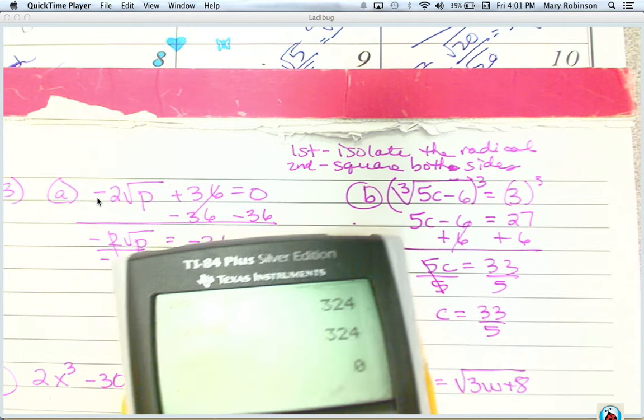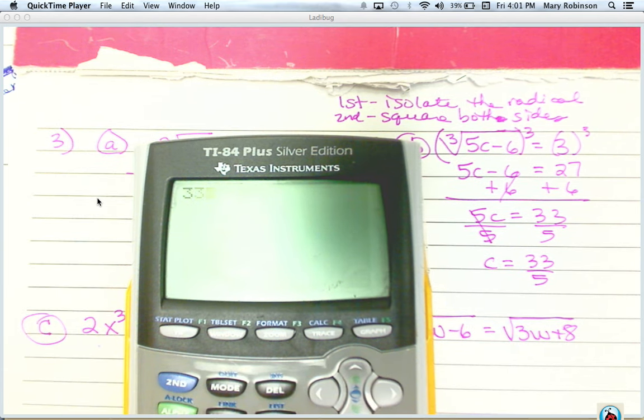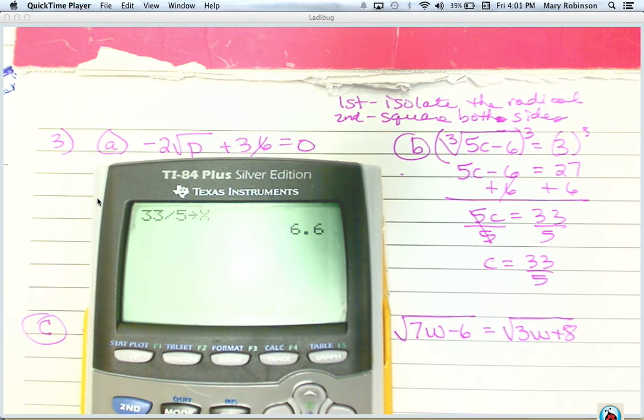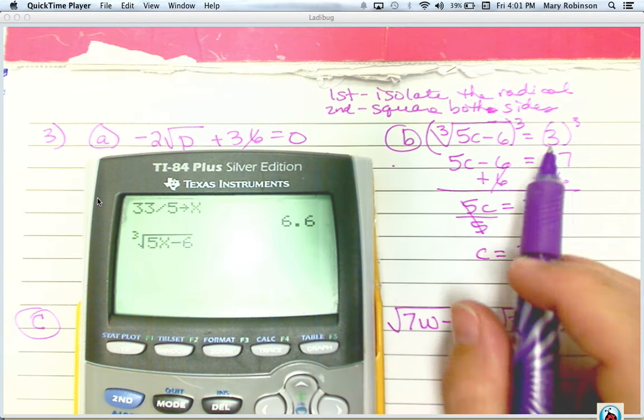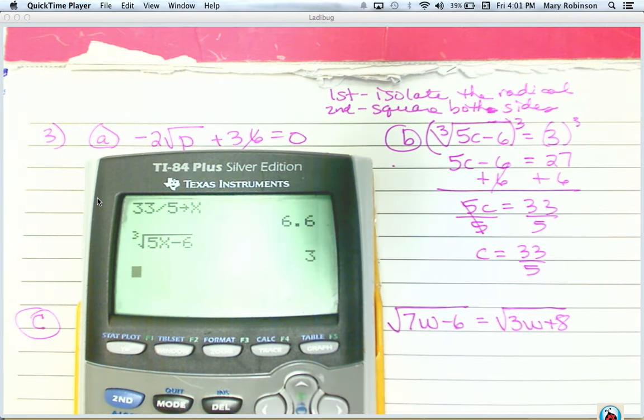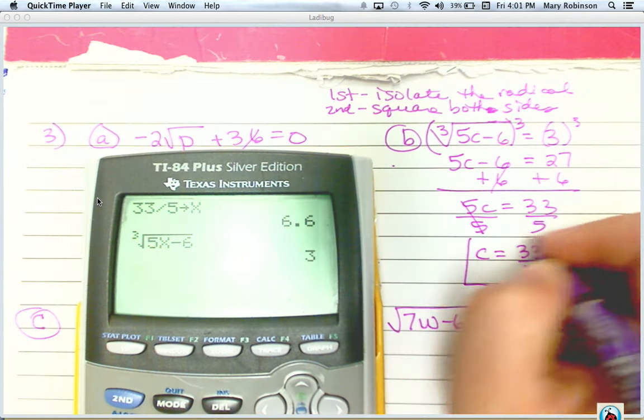So let's check it out. So 33 divided by 5 store as x. And then I'm going to type in cube root, so I go to math, 4, 5x minus 6. And if it's correct, it will come out to equal 3. And it does, so we're good.